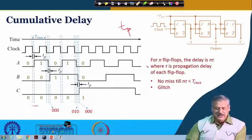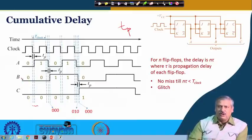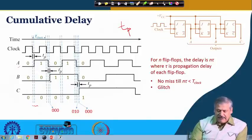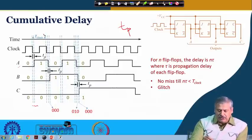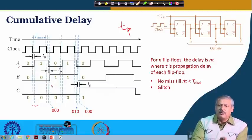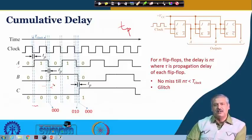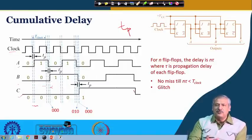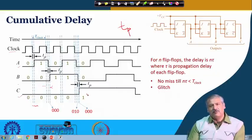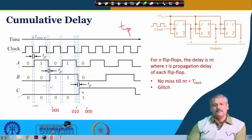Flip-flop B is not fed by the clock directly — it is fed by flip-flop A. When flip-flop A changes, one more propagation delay is required inside flip-flop B for its output to change. So from the clocking instant, the change of B requires the propagation delay for A plus the propagation delay for B — two propagation delays in total. For flip-flop C, which is triggered by B, B already takes two propagation delays from the clocking instant, so C requires three propagation delays.